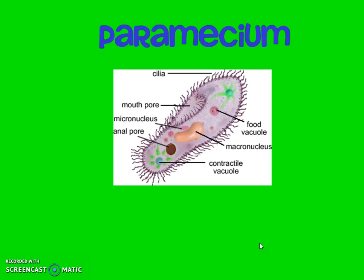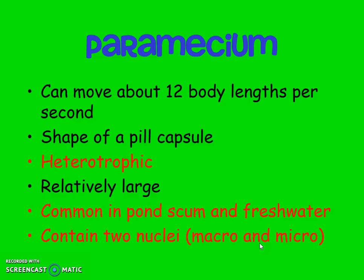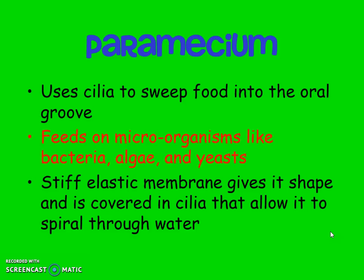The paramecium is the most complex and specialized of these protists, and it moves by cilia — the hair-like projections. The paramecium can move about 12 body lengths per second, so it can move pretty fast. I remember this because of the shape of a pill capsule — paramecium and pill both start with a P. It's heterotrophic, meaning it eats its own food. It's relatively large, found in pond scum and freshwater, and the paramecium contains two nuclei. The paramecium uses cilia to eat into their oral groove, and they like to eat bacteria, algae, and yeast.